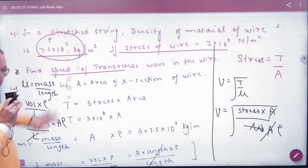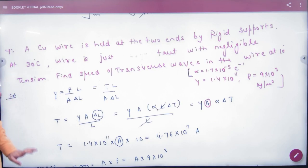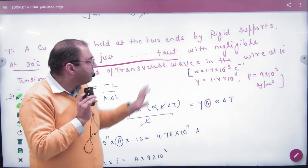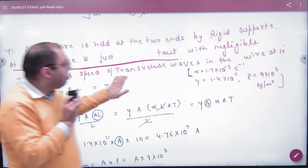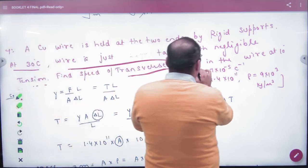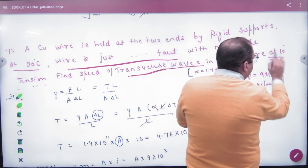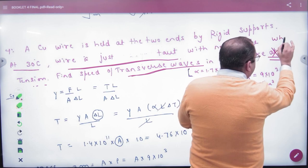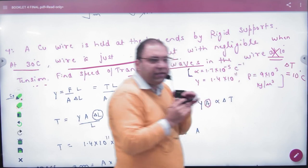Saari game kispe dependent hai: mu ko kaise likhna hai, area into density. To samajh mehra hai. Haan tak, to formula register mein note kar lehen hai. To mu is equal to area into density. Jaise next hai: copper wire hai, copper wire hai is held at two ends by a rigid support. Copper wire ko 2 ends se bandh diya.